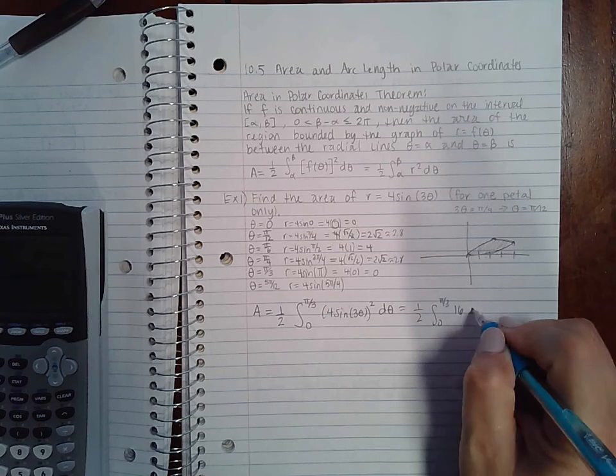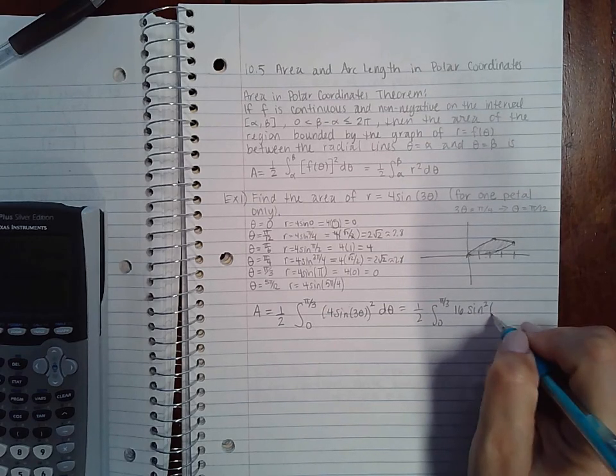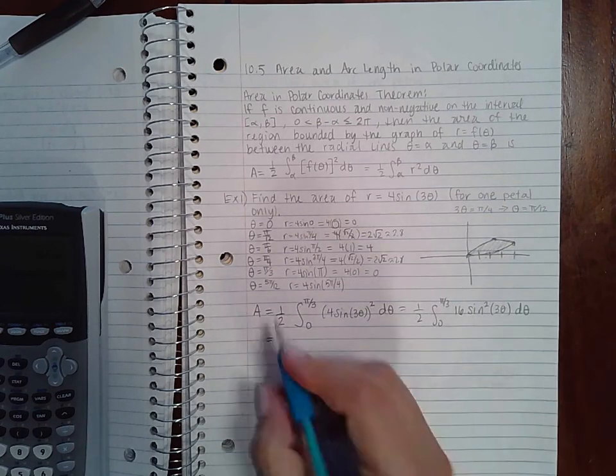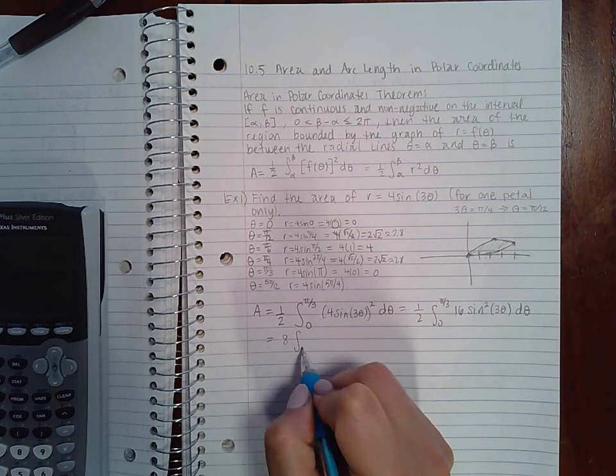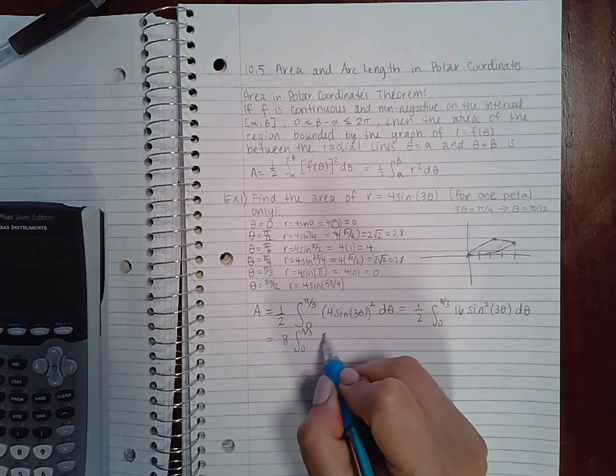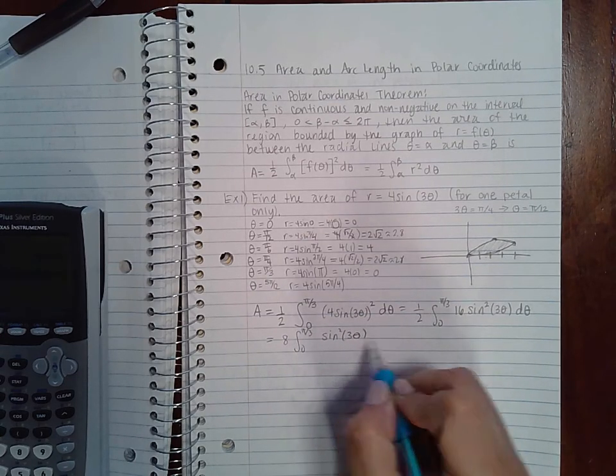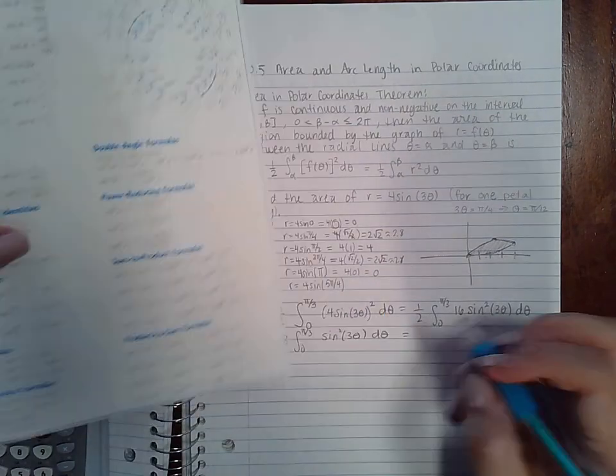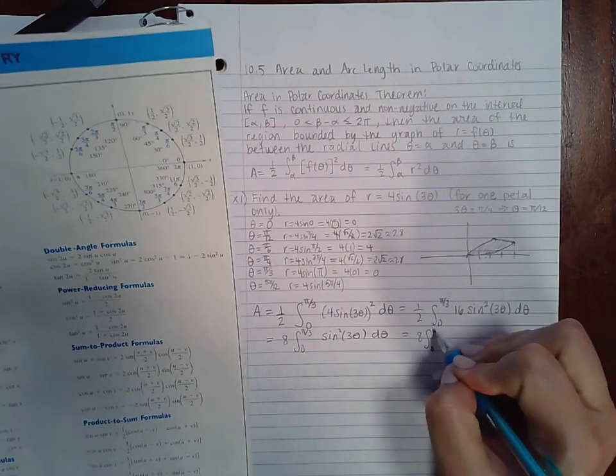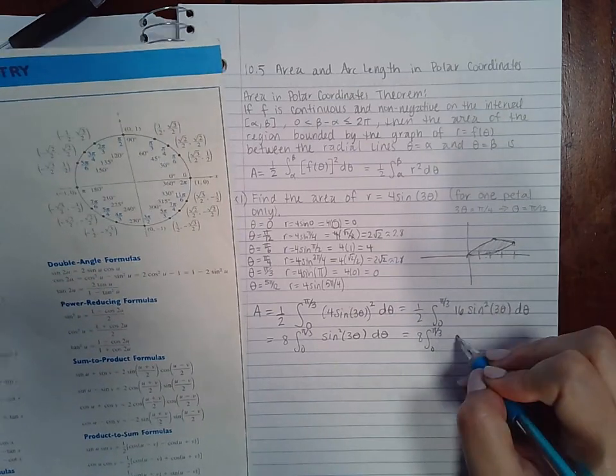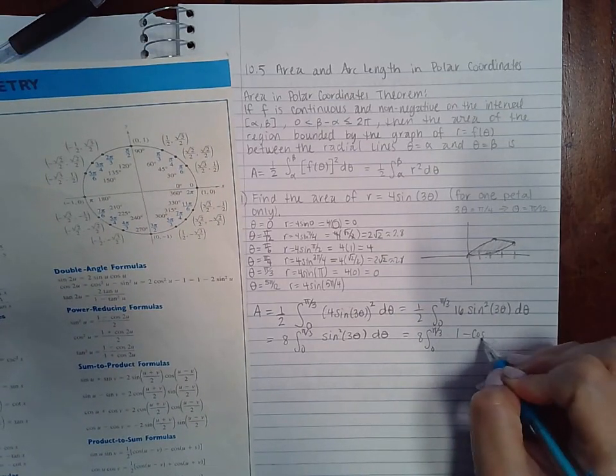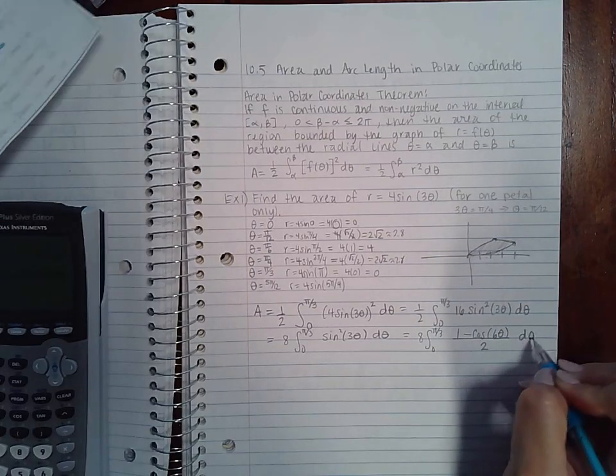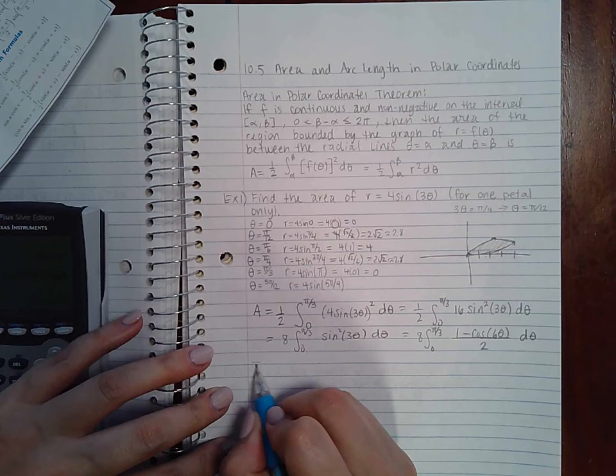So I get 16 sin²(3θ) dθ. That will reduce with the one half so I'll get 8. Eight and then sin²(3θ), and the only way to do this is to do the power reducing formula. So I have 8 and then I have [1 - cos(6θ)]/2.